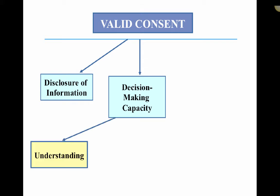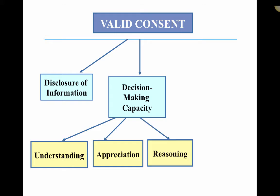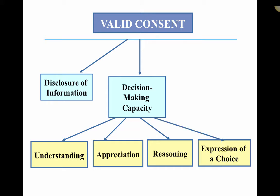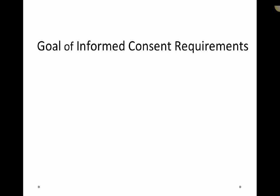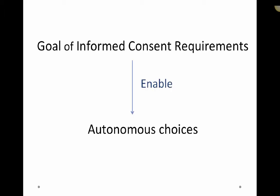First and foremost, the patient needs to understand the factual information that was disclosed. The patient also needs to appreciate the situation he or she is in, and needs to have adequate reasoning abilities in order to express a choice. In addition to decision-making capacity, one has to ensure that the choice is voluntary — that is, made in a non-coercive setting. The goal of informed consent requirements is to enable autonomous persons to make substantially autonomous choices about whether to authorize a medical intervention.